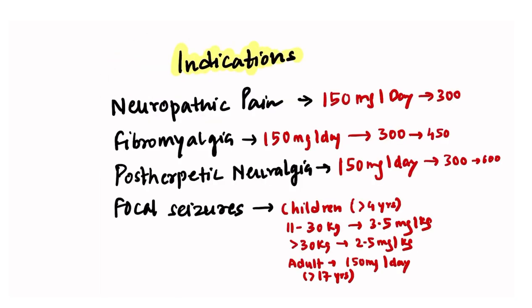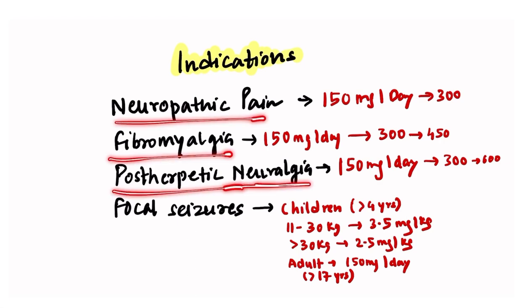This action of pregabalin can be used for certain conditions like neuropathic pain, fibromyalgia, post-herpetic neuralgia, and focal seizures.